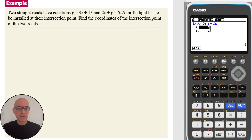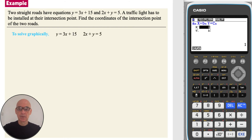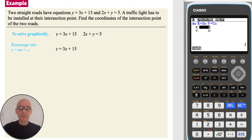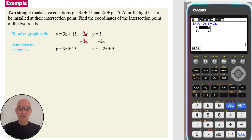In this question we're asked to find the coordinates of the point of intersection of the two lines. To solve the equations graphically we need to rearrange them into the form Y equals MX plus C. The first equation is already in that form, so in the second equation, subtracting 2X from both sides gives Y equals negative 2X plus 5.